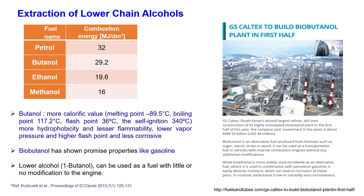Comparing separation techniques — the y-axis being energy requirement in kcal per kg of butanol produced — distillation requires the most energy and highest cost. There is also gas stripping, adsorption, extraction, and pertraction; extraction is comparable to adsorption and may be used to absorb butanol. Comparing fuel properties: petrol has a combustion energy of 32 MJ per dm³; butanol has higher combustion energy than ethanol or methanol. Butanol has a boiling point of 117°C, flash point 86°C, self-ignition at 343°C, is more hydrophobic, less flammable, lower vapour pressure, higher flash point, and less corrosive.